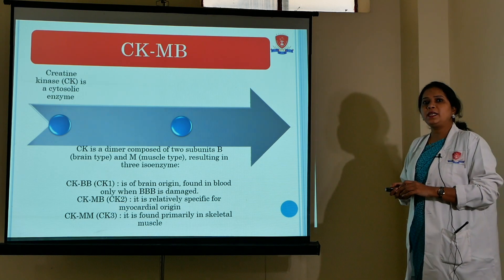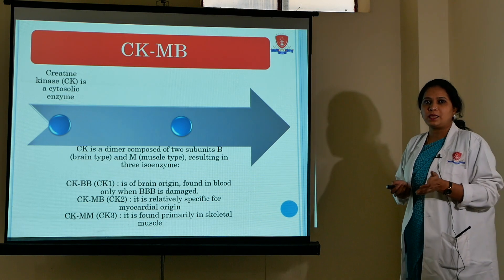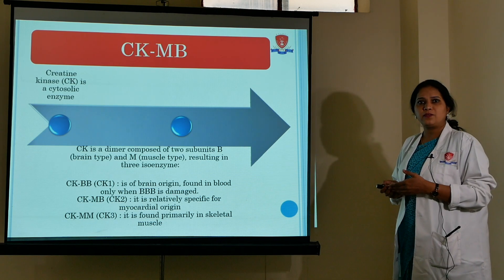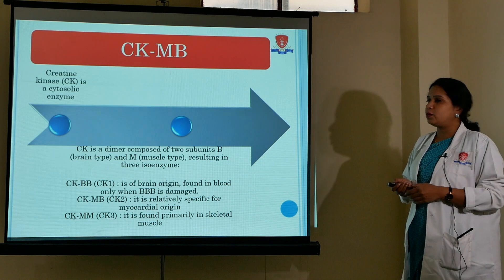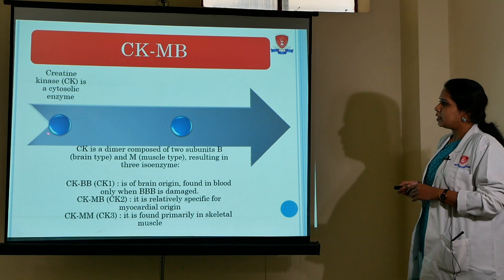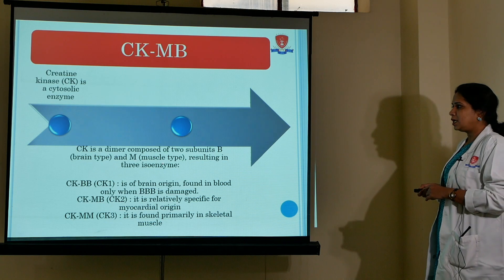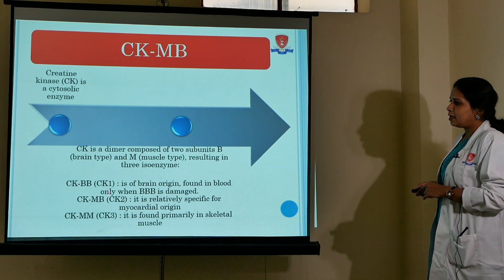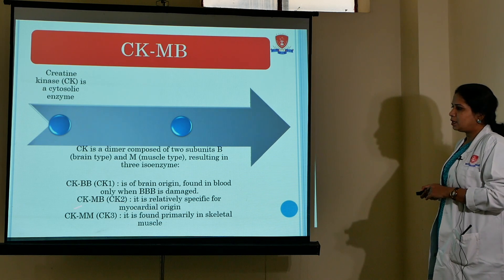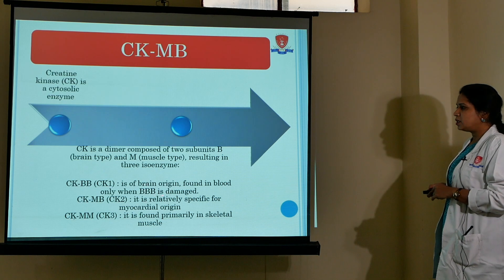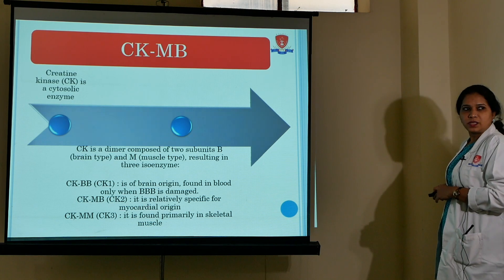CKMB: Creatine kinase (creatine phosphokinase) is an enzyme required for conversion of creatine to creatine phosphate, a high-energy compound useful in sudden energy requirements of cardiac muscles. It is a cytosolic enzyme and a dimer composed of two subunits — subunit B (brain type) and M (muscle type). CK has three isoenzyme forms: CK1 (CKBB), CK2 (CKMB), and CK3 (CKMM). BB is concentrated in the brain, MB in myocardial tissue, and MM in skeletal muscle.